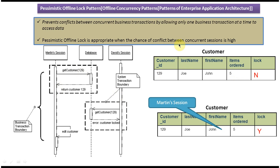The pessimistic offline lock pattern is appropriate when the chances of conflict between concurrent sessions are high. If the chances of conflict are low, you can use the optimistic offline lock pattern instead. I have created a separate video on optimistic offline lock — please visit my channel to watch it and understand the difference between the two patterns.